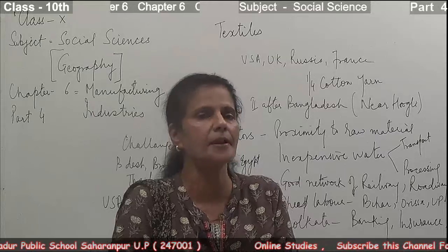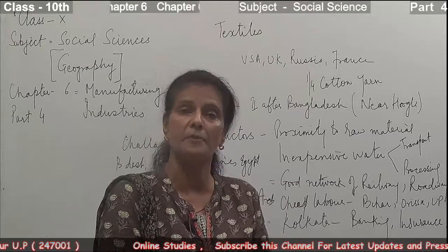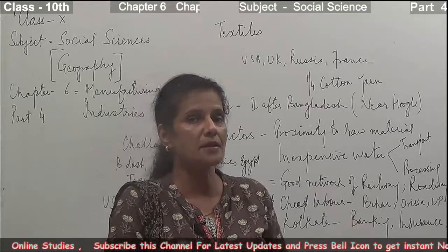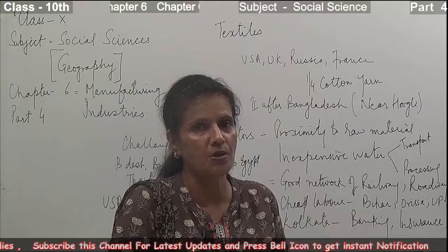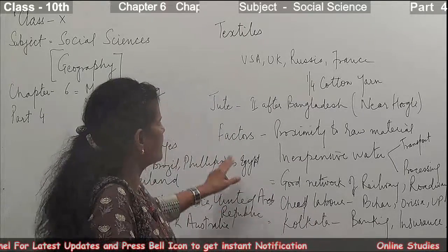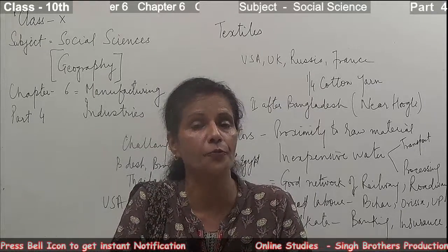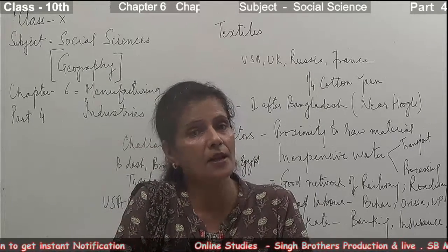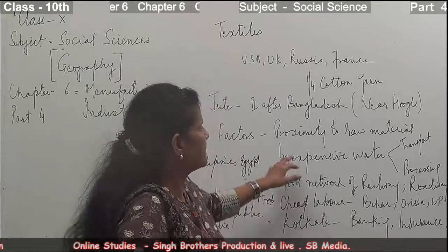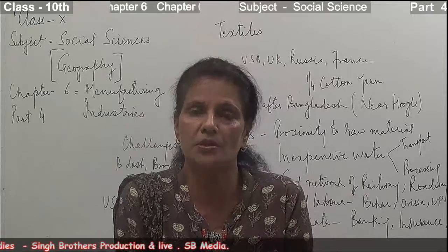After independence, and particularly after globalization post-1991, the industries are working well and making strides. Our cotton garments and cotton textiles are very famous internationally. Moving on, we are discussing agro-based industries. The first was cotton; the second is the jute industry. India stands second in the production of raw jute, after Bangladesh, which was previously part of India.